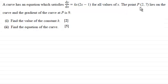The point P with coordinates (2, 7) lies on the curve and the gradient of the curve at P is 9. In the first part we need to find the value of the constant k, and in the second part find the equation of the curve.